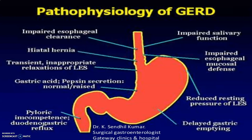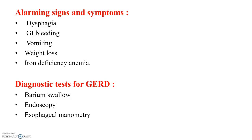What are the alarming signs and symptoms involved in GERD? Dysphagia, gastrointestinal bleeding, vomiting, weight loss, iron deficiency, and anemia are some of the signs and symptoms involved in GERD.